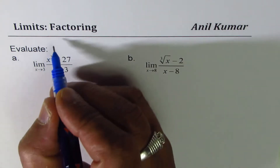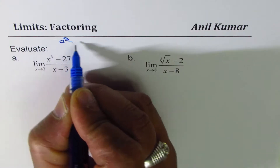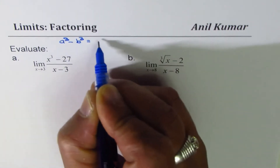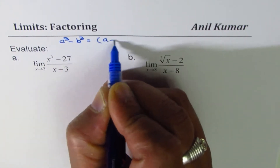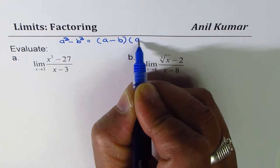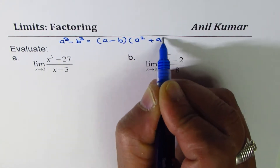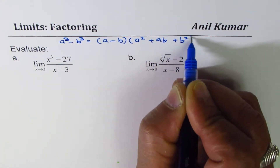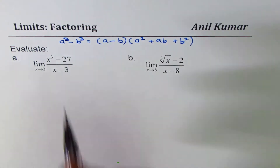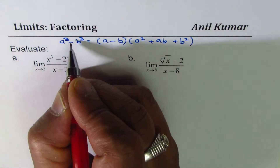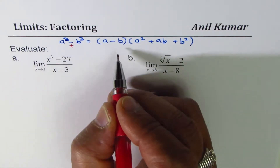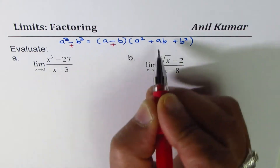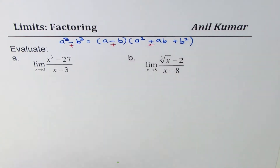I hope you remember the formula: a cube minus b cube can be written as (a minus b)(a squared plus ab plus b squared). If you have a cube plus b cube, the formula changes a bit and we get (a plus b)(a squared minus ab plus b squared).